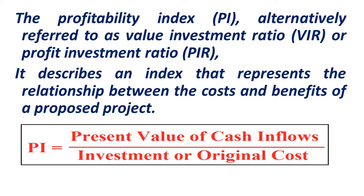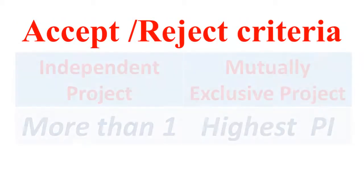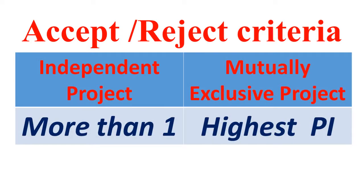It shows the relationship between the present value of cash inflows we are generating and how much we are investing. The profitability index is calculated with the formula: PI equals present value of cash inflows divided by investment or original cost. The accept-and-reject criteria: for an independent project, PI should be more than one; for mutually exclusive projects, whichever project gives the higher PI will be accepted.